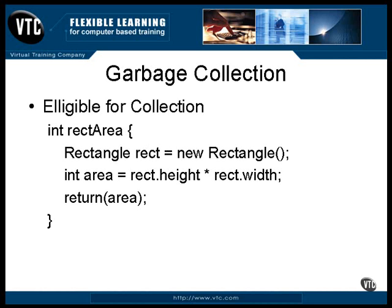Another way to do it is to have the reference disappear. That happens when you create an object inside a method. When you call this method, it creates a rectangle object and stores its address in a local reference, then uses those values to calculate a return value. When the method returns, the rectangle still exists but the reference to it does not. Your program doesn't know the address of the rectangle object so Java schedules it for garbage collection.